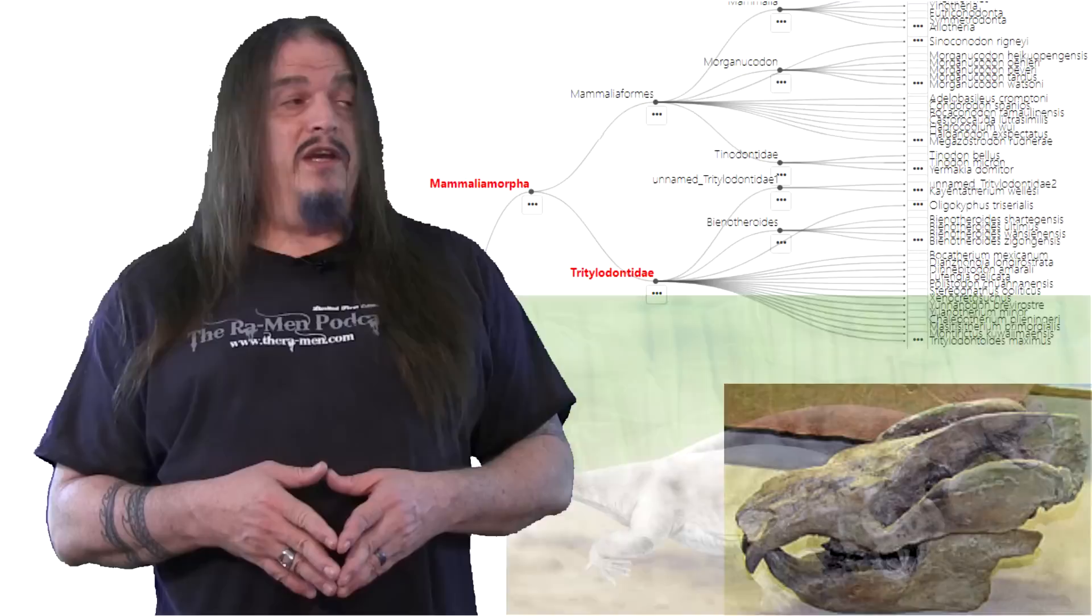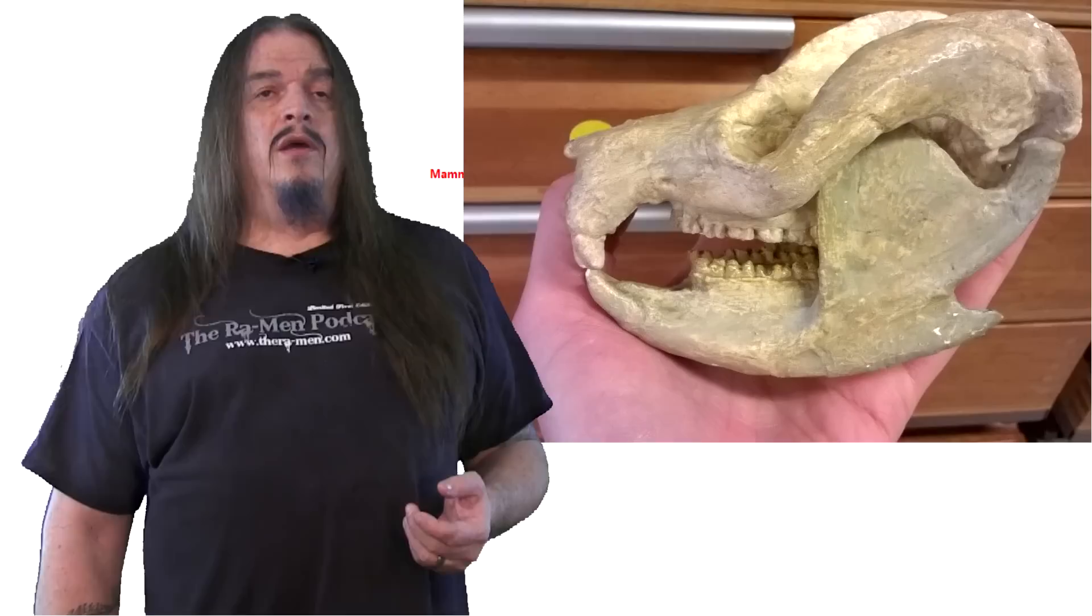Tritilodonts are largely omnivorous and many herbivorous. They had a very powerful bite with enormous jaw muscles, but even though they were cynodonts which are famous for their fangs, Tritilodonts didn't have their canines anymore.